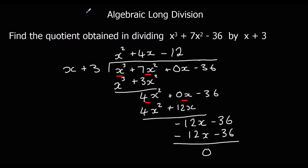The subtraction gives us zero — we are done. The quotient obtained is x squared plus 4x minus 12.